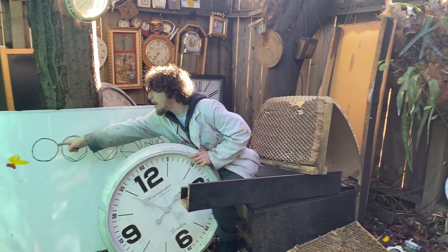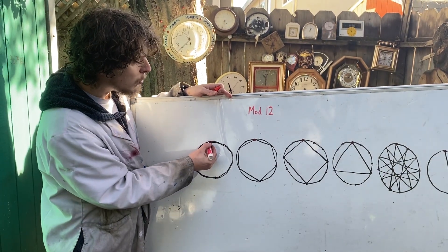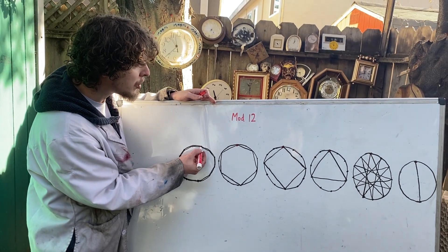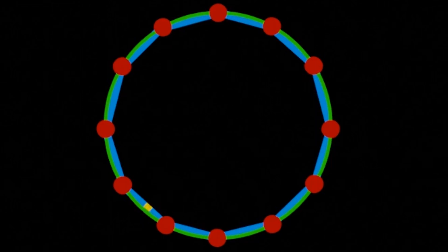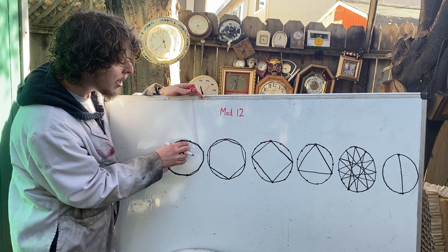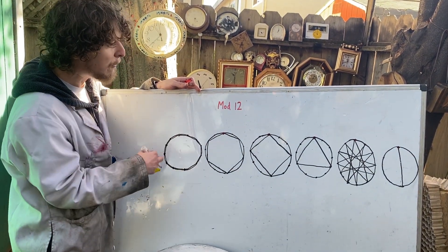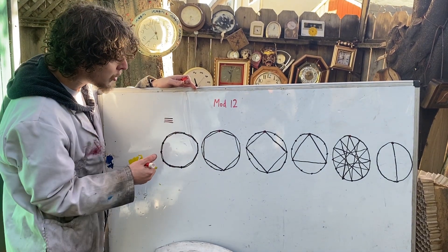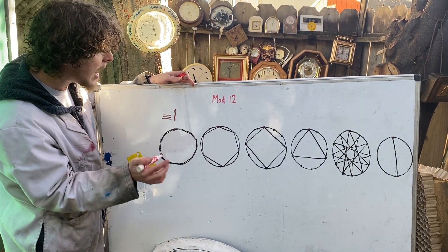In this picture I have 12 dots evenly spaced on the outside of a circle. I've started at one at the top — we'll call it zero, or 12 on a clock — and connected each dot to the one that's one clockwise from it. That gives a 12-sided regular polygon touching each of those 12 points. The same picture would result from connecting dots 13 or 25 apart, since those are all congruent to 1 in mod 12.